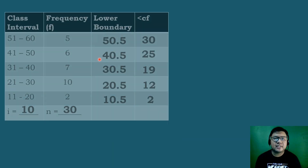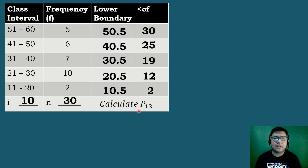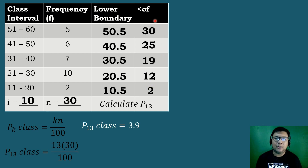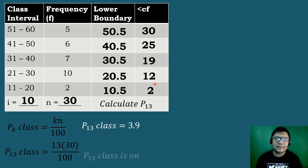Let's solve our next example and calculate the value of Percentile 13. We identify the percentile class using k times n divided by 100, substituting k equal to 13 and n equal to 30. So 13 times 30 divided by 100 is equal to 3.9. Looking at our less than cumulative frequency: 2 is less than 3.9, so not the percentile class. Then 12 is greater than 3.9, so the percentile class is located at the second class.